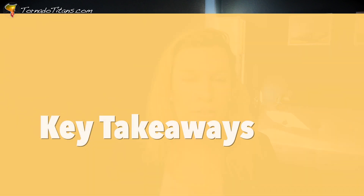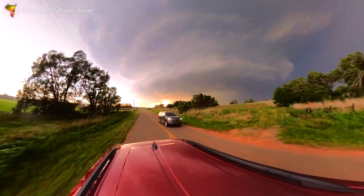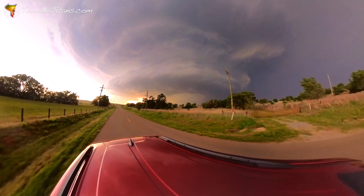To review, the takeaways are simple. One: storm motion vectors on these soundings, estimated by models, are just guesses — not fully right. I've seen storms move well to the right of the right-moving vector and well to the left. This probably helps explain why some storms in big environments don't produce and some do — it has to do with how storms maximize their environment. And two: you're looking for those right turns for storms to do big things. Big structure, big tornadoes are all associated with right turns. When you see a storm turn right, it's taking the most out of its environment.